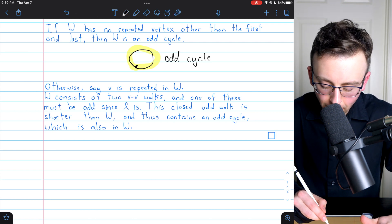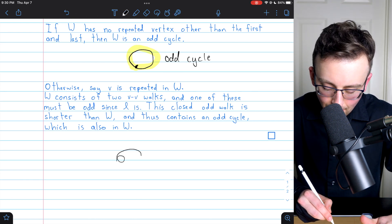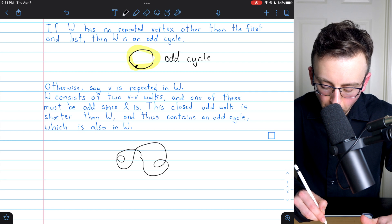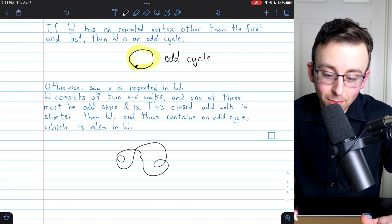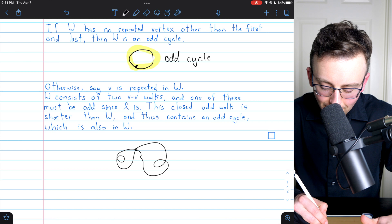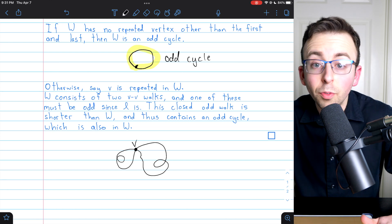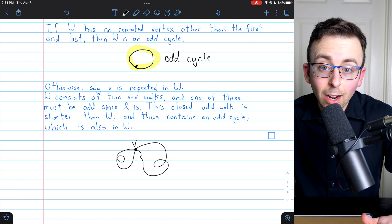So W might look something like this. Just make sure it intersects itself a couple times. And perhaps this here is our vertex V.